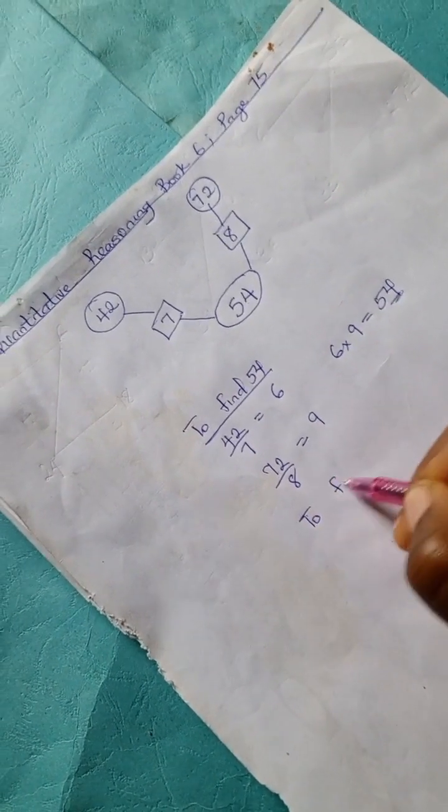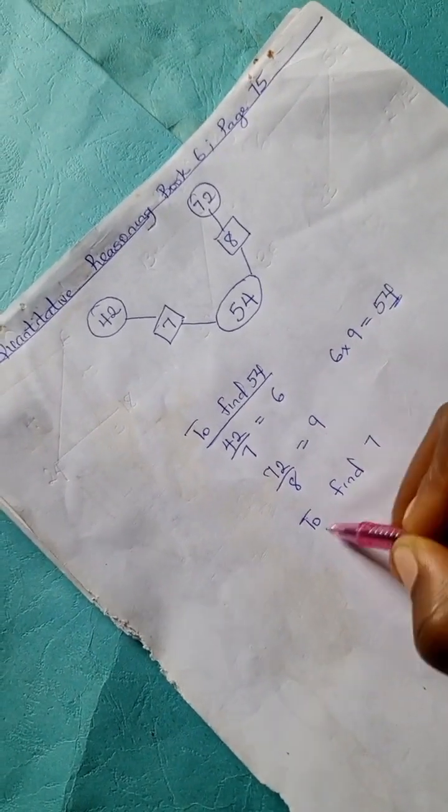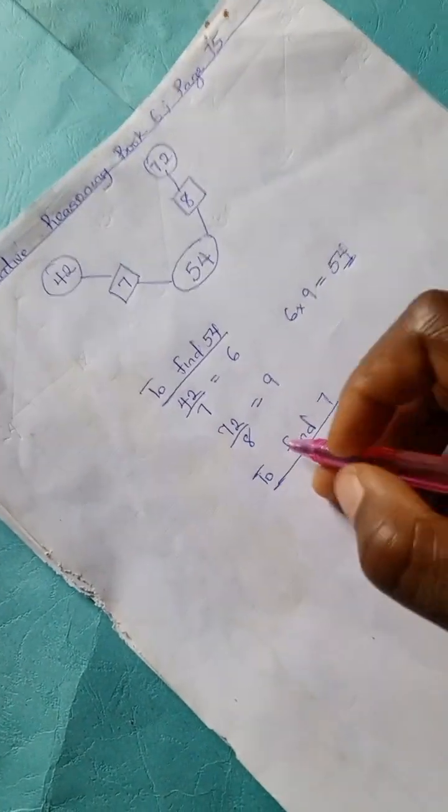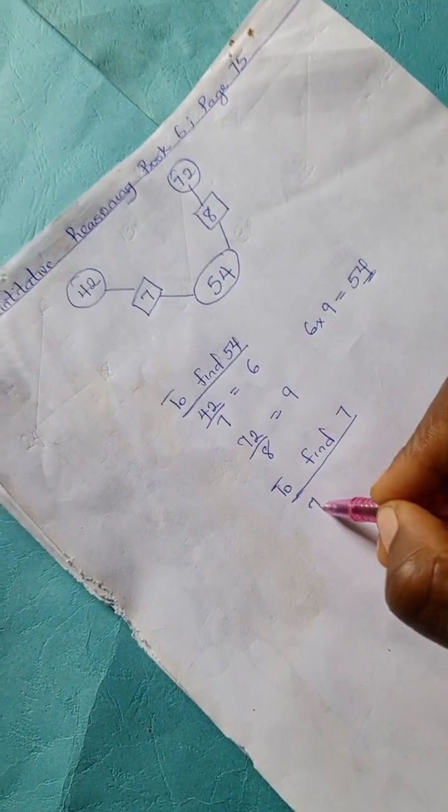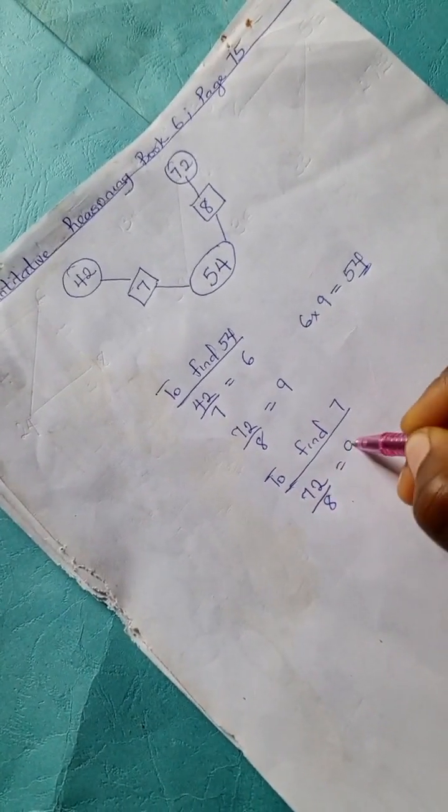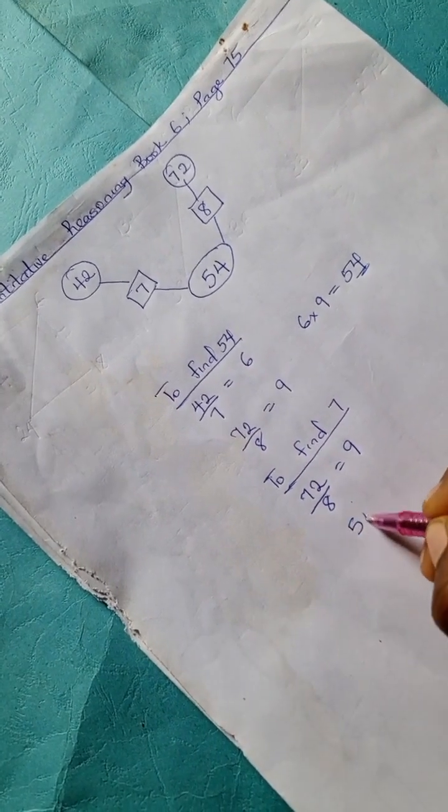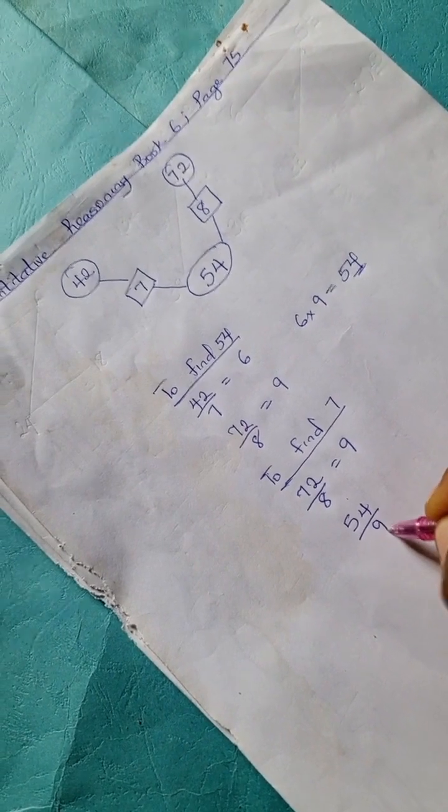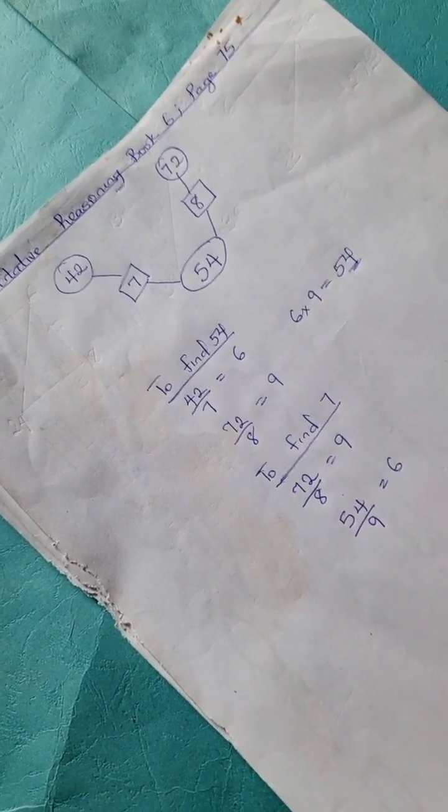To find 7, we have 72 divided by 8 is 9, and 54 divided by 9 is 6.